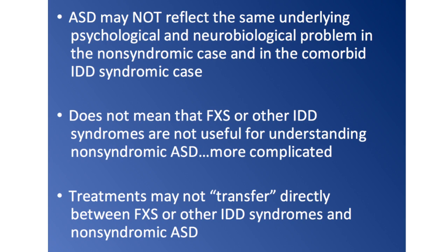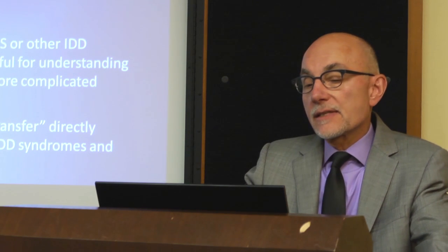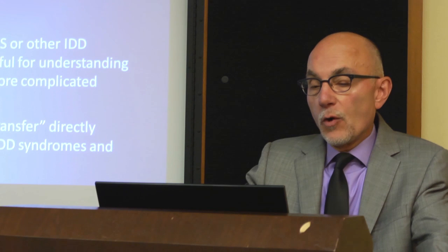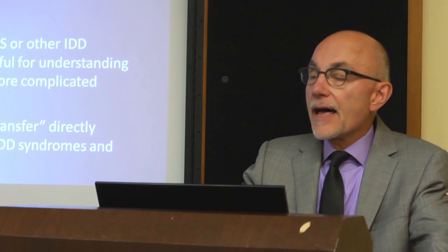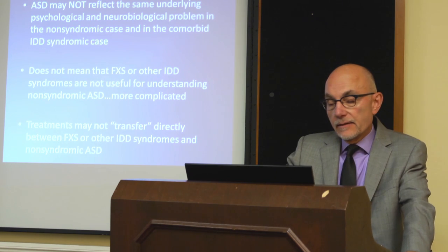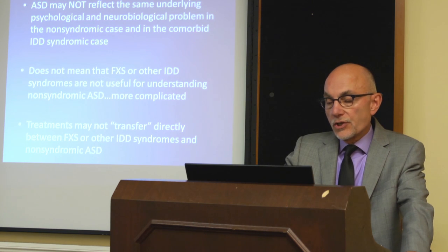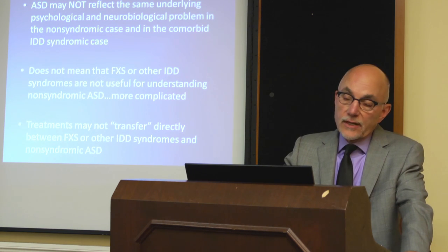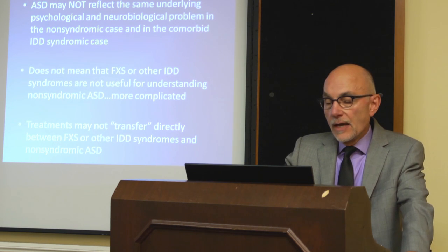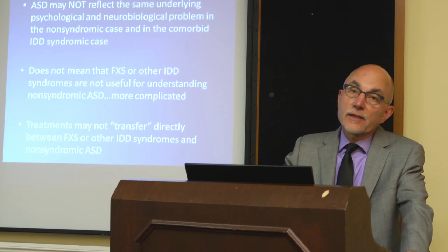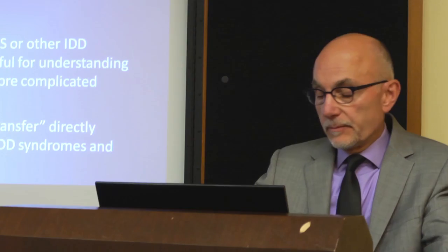To summarize what we and others are finding, at least when it comes to fragile X: ASD may not reflect the same underlying psychological and neurobiological problem in the non-syndromic case as in the comorbid IDD syndromic case. This does not mean fragile X or other IDD conditions are not useful for understanding non-syndromic autism, but it means it's a far more complicated picture. There is not a simple window from fragile X onto non-syndromic autism, and most importantly, treatments may not transfer directly between fragile X or any other IDD syndrome and non-syndromic autism.